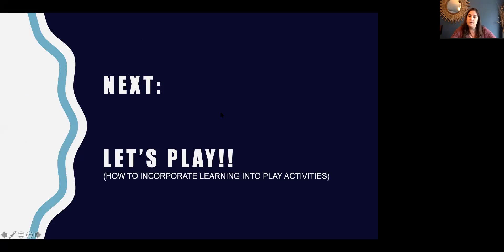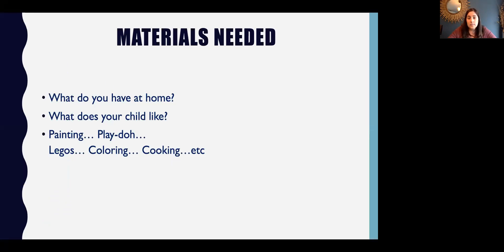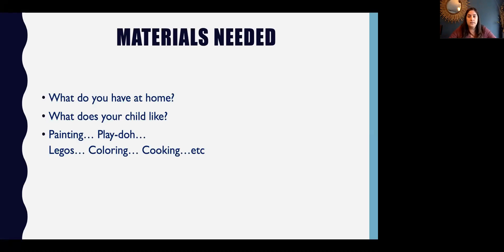Now we're going to look at different ways to incorporate all of these skills into play activities, then move on to daily living skills. The materials you need are just what you have at home — what does your child like to play with? For example, do you have Play-Doh? Legos are very simple and you can work on a lot of different skills with them. Coloring, art projects, glue sticks, cooking activities — we can incorporate so many different skills just with things you have around your home.